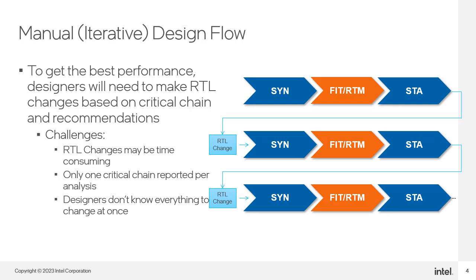You may remember from the HyperAware online training that the HyperRetimer reports the path that is limiting performance and provides suggestions on how to fix it. This is helpful, but can still involve a compilation flow of many iterations. For example, you compile your design, read the HyperRetimer report to see what needs to be changed, make the change, and compile again. The HyperRetimer then reports a new path that needs modifying, so you make a new change and compile again.